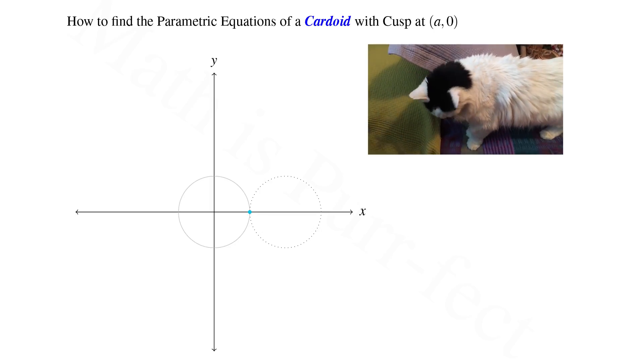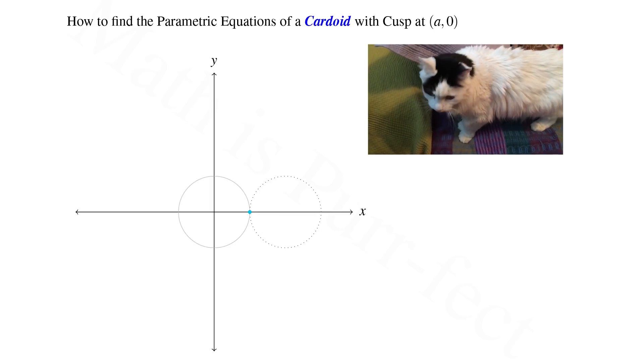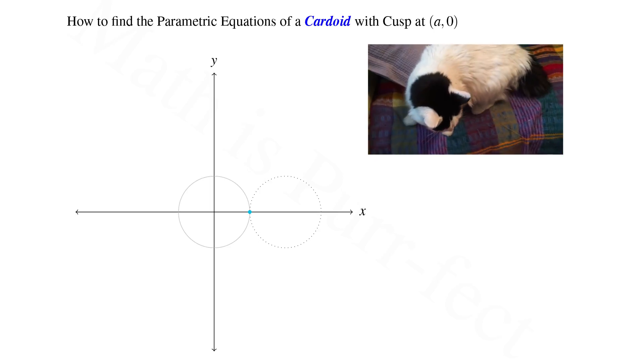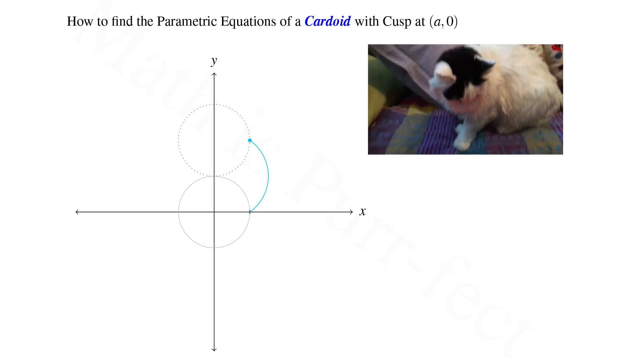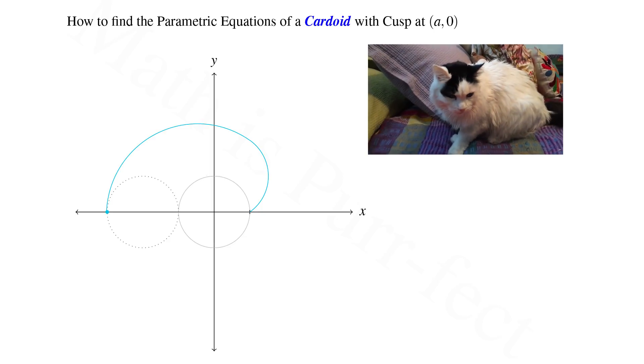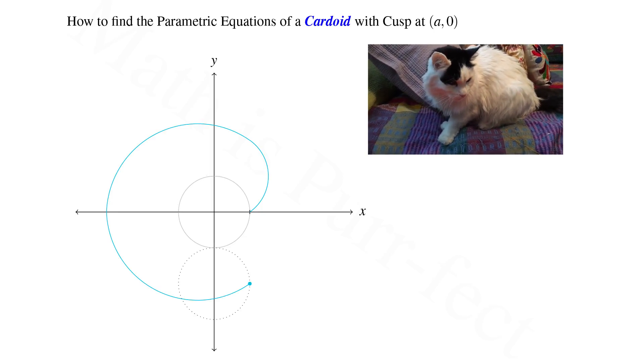Where the two circles touch at a comma zero, we will affix a point in blue to the second circle. To create a cardioid, we slowly rotate the second circle about the first and let our point in blue trace out the indicated curve.